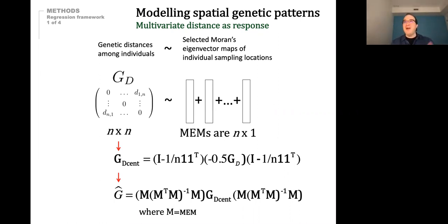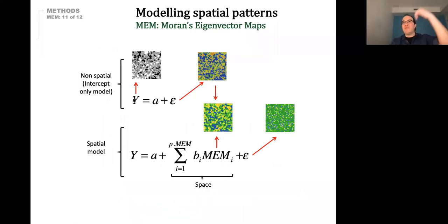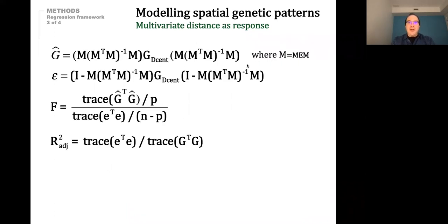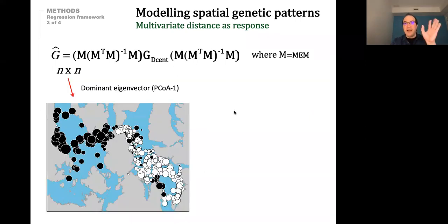You can algebraically decompose genetic distances: you could model one vector as a response, or you could model genetic distances — or any distances — as a response matrix against those Moran's eigenvector maps. This is all implemented in the MEMgene package and allows us to estimate the parameters of how genetic variation changes as a function of space.